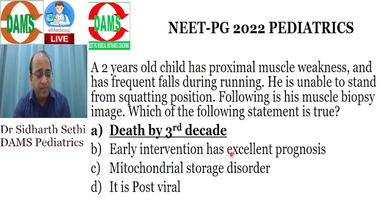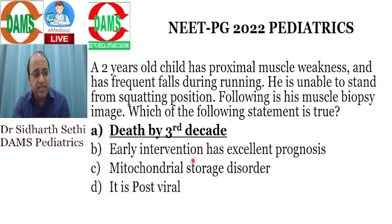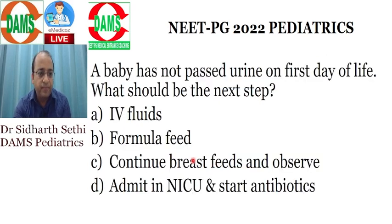Death by the third decade would be the best option for this question. There is a lot of research on new gene therapy for Duchenne's but it is not a drug of choice or FDA-approved as of now.